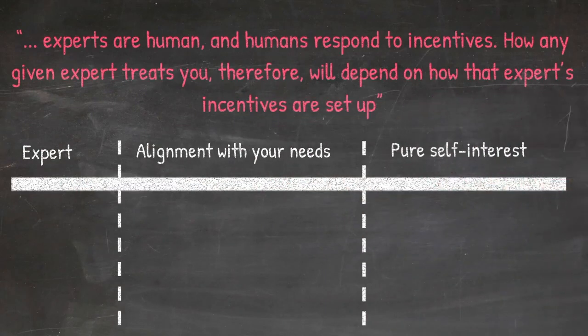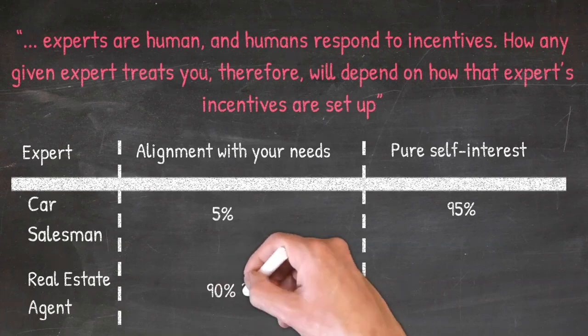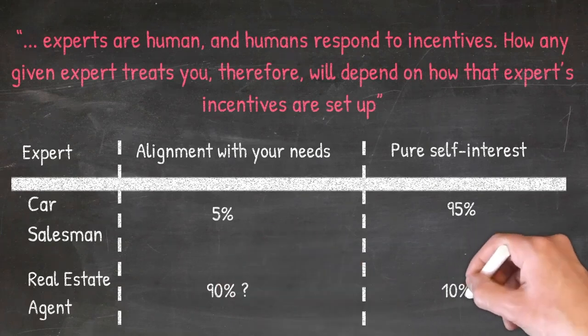And while the stereotypical car salesman may only be 5% aligned with your need to find a vehicle that you want, and 95% driven by the commission check, Freakonomics provides a great example of the more common case, where an expert may appear in perfect support of your needs until you reach a certain threshold.